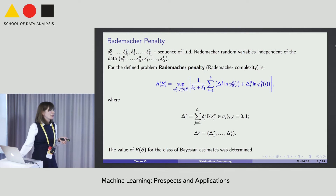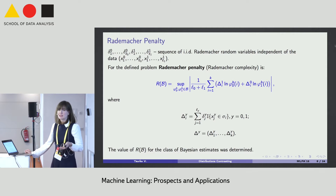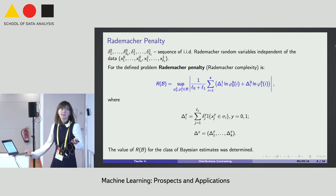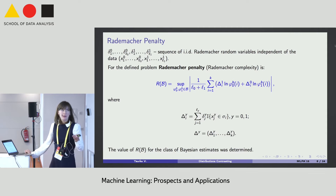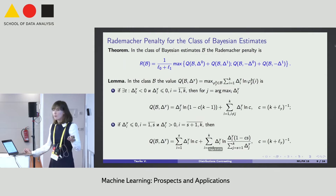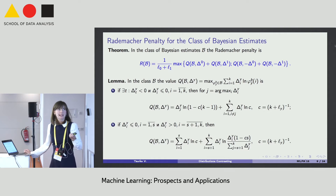The Rademacher process can be interpreted as a correlation between independent Rademacher noise and the values of functions from the considered class. If the Rademacher complexity is large, it means there is a function that fits the noise very well — usually meaning the considered class is too large and too complex. The advantage of this method is that the Rademacher complexity for the considered class of Bayes estimates is calculated directly in closed form, as given by the following theorem.